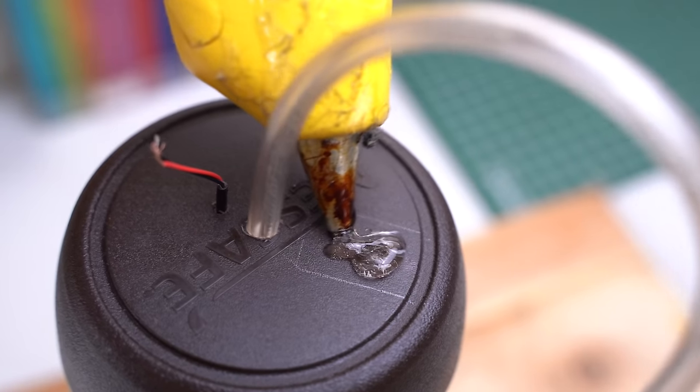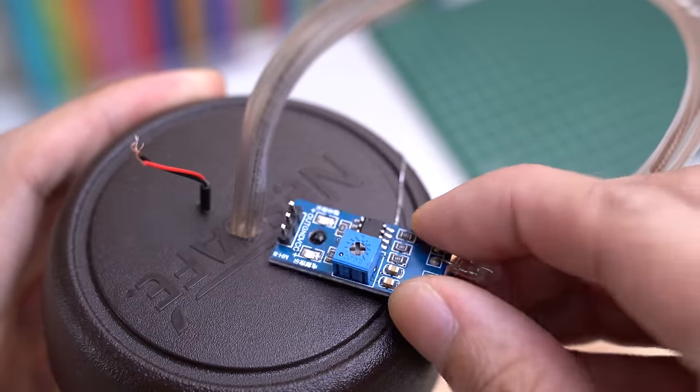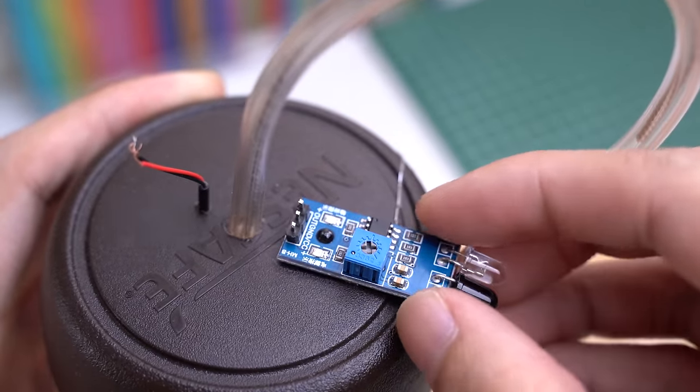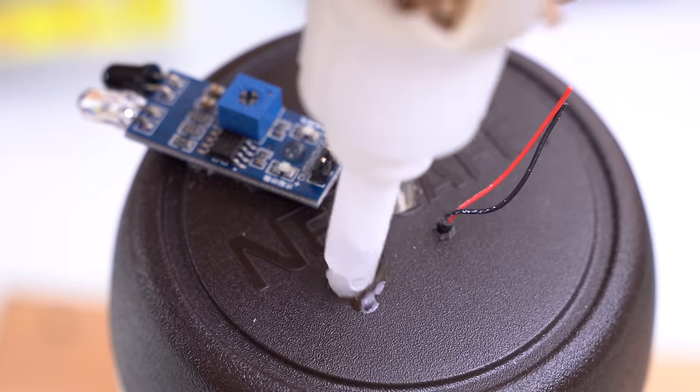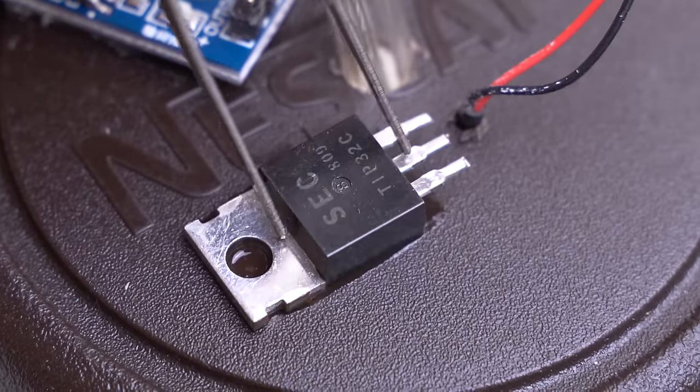Use your hot glue gun to mount the proximity sensor in place. With a few drops of superglue, mount the transistor on your container's lid. It's very unlikely for the transistor to heat up in this setup.